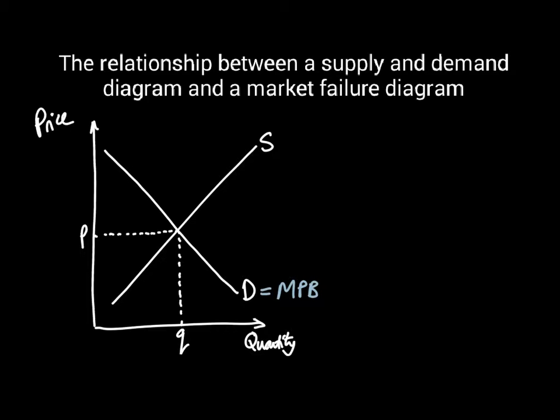At the same time, firms deciding whether to produce are taking account of the costs to themselves of one additional unit - the private costs of one more unit, or marginal private cost. Adding the MPC and MPB labels is just elaborating on what demand and supply is - they're essentially the same concepts.